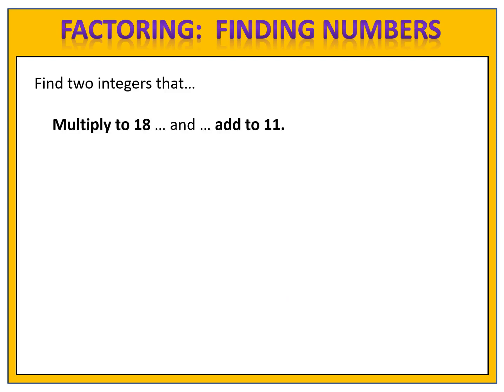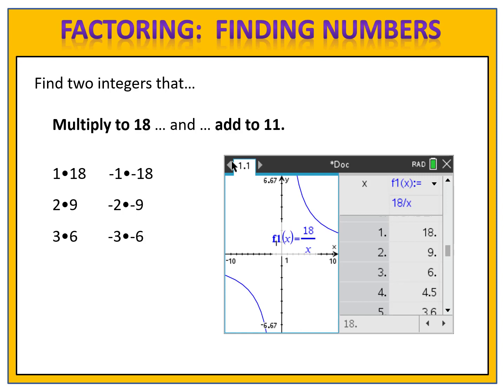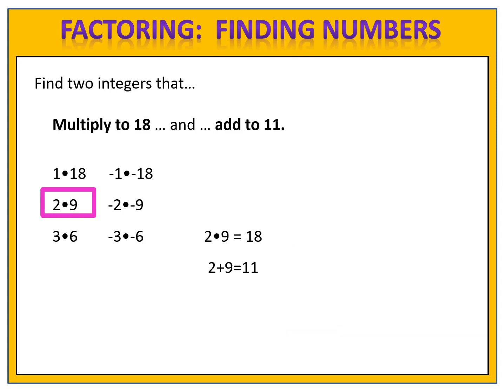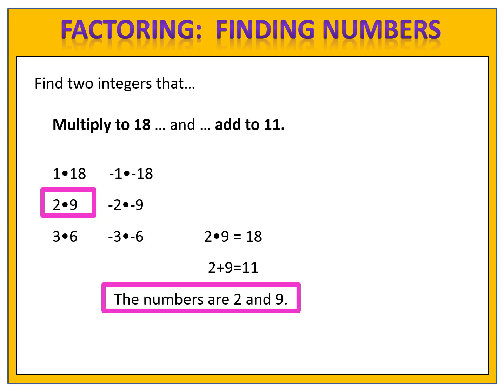Let's find two integers that multiply to 18 and add to 11. Pause the video here and see if you can find them. The factor pairs are 1 times 18, 2 times 9, 3 times 6, and their negative counterparts: negative 1 times negative 18, negative 2 times negative 9, negative 3 times negative 6. You may have gotten these from your graphing calculator. Which pair adds to 11? That's 2 and 9: 2 times 9 equals 18, and 2 plus 9 equals 11. The numbers are 2 and 9.